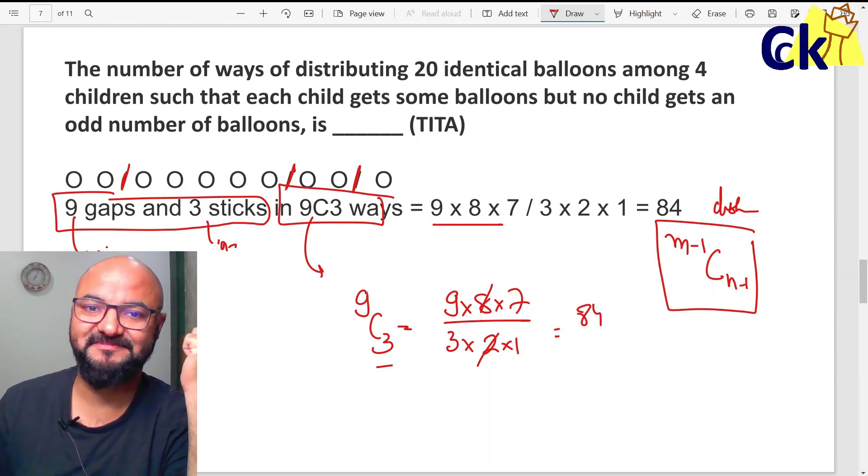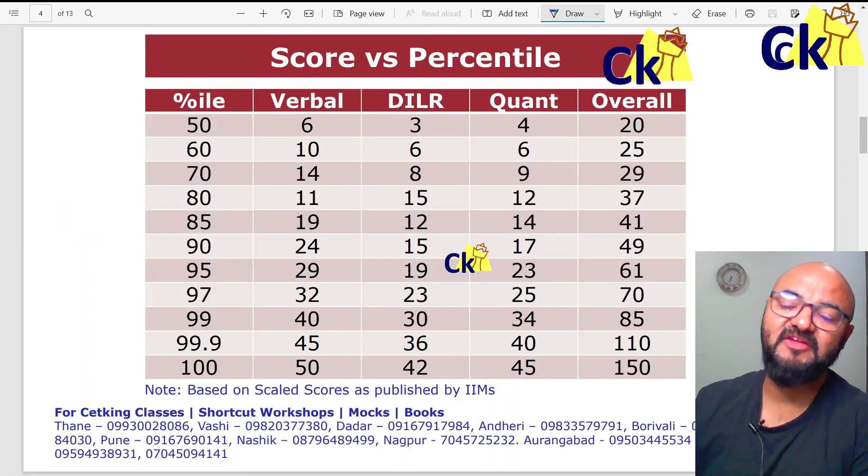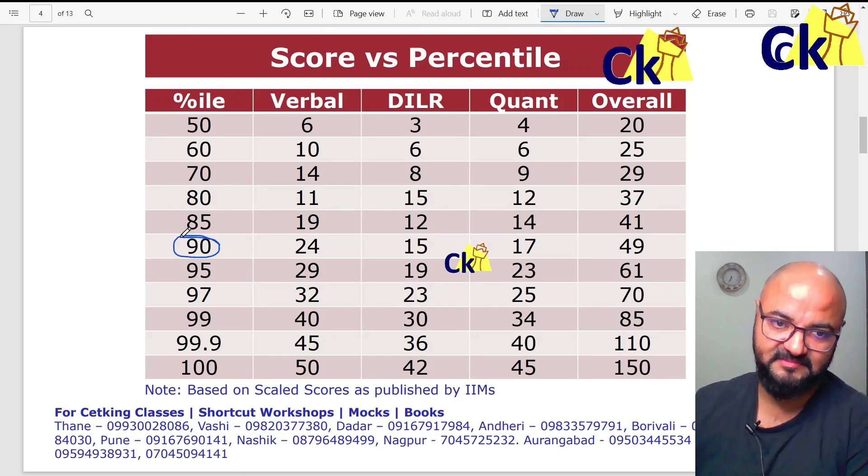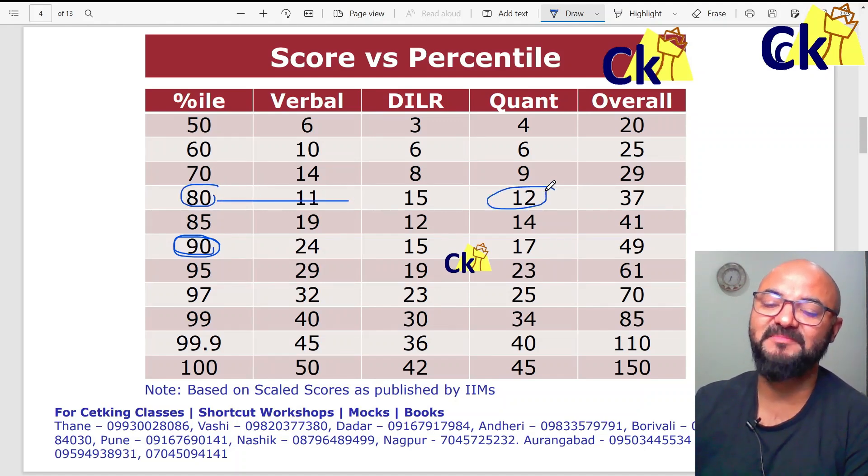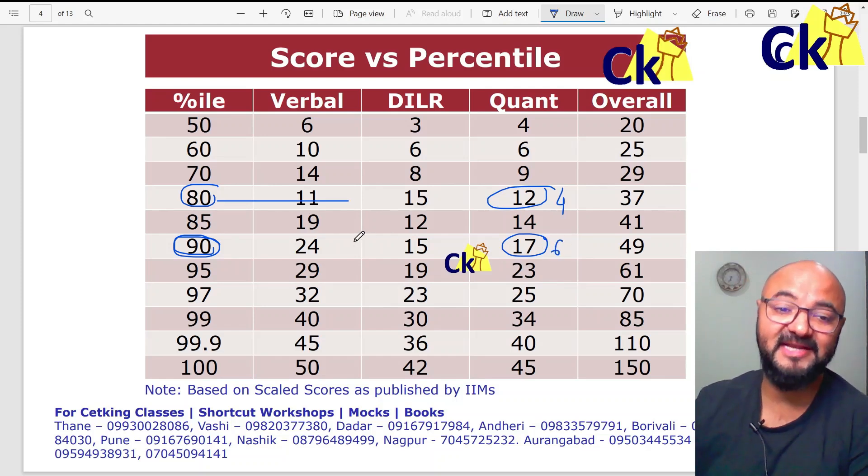If you apply shortcuts like this, your target should be 90 percentile. Worst case target 80 percentile. 80 percentile ke liye maths mein 12 number chahiye, 17-18 marks. 12 number divided by 3, 4 questions thik kar diya, 6 questions thik kar diya, I am getting 90 percentile in the section which you are weak at.